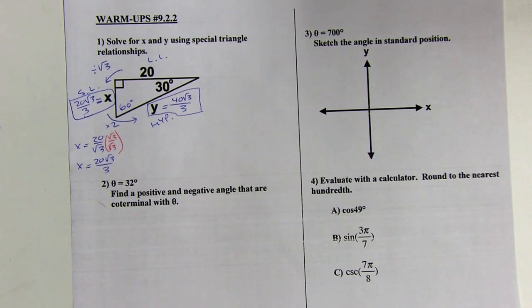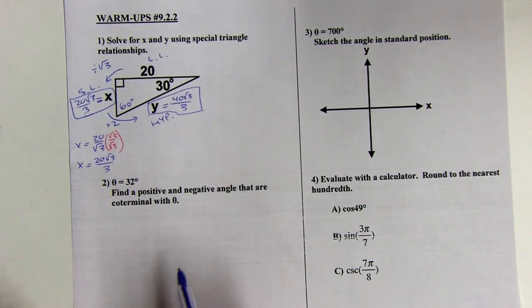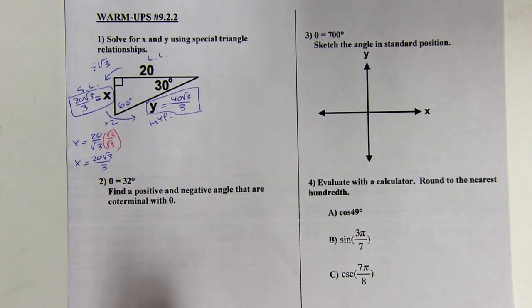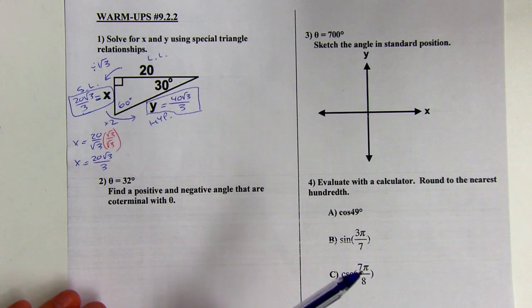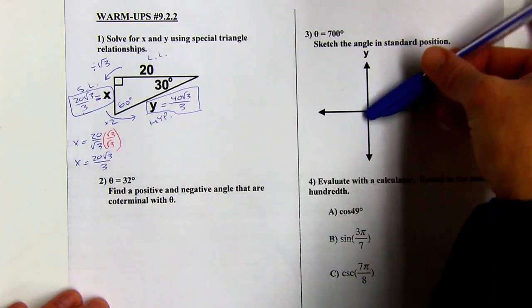Okay. All right, next problem. We've got a 32 degree angle and we want to find a positive and negative angle that are coterminal with a 32 degree angle. So coterminal angles are going to look the same in standard position.